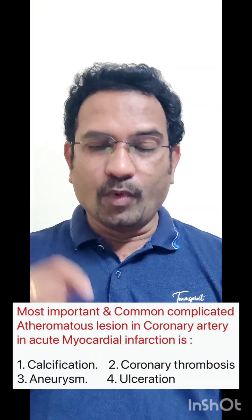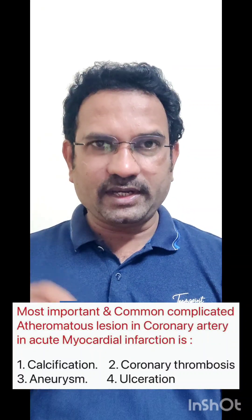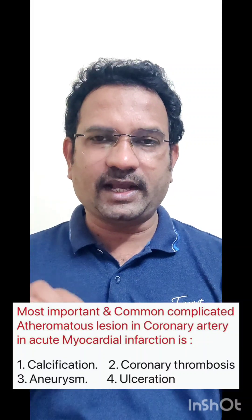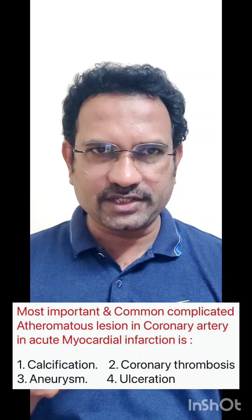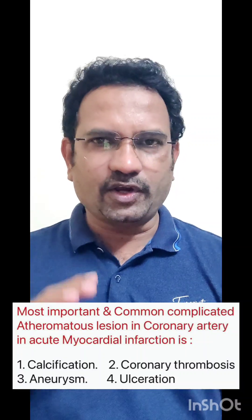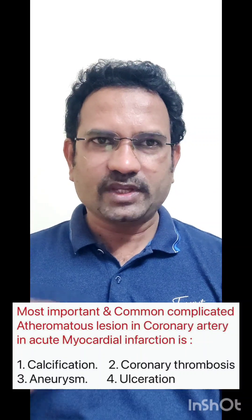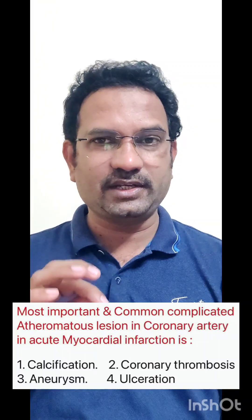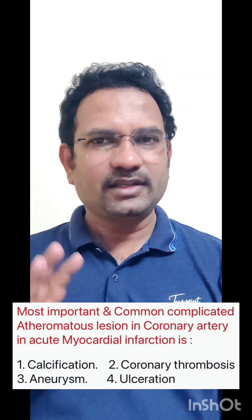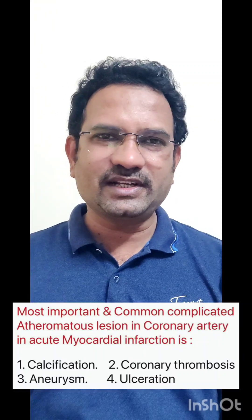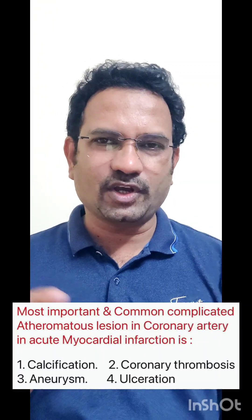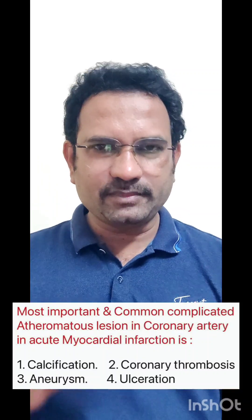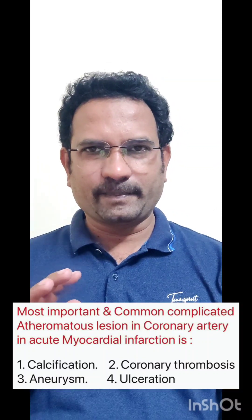Look at the question. This is from the 2018 assistant professor pharmacy subject exam. The question is: 'Most important and common complicated atheromatous lesion in coronary artery in acute myocardial infarction is?' The options are: calcification, coronary thrombosis, aneurysm, ulceration.